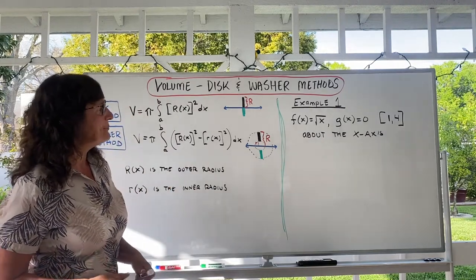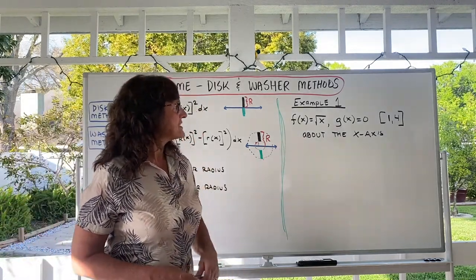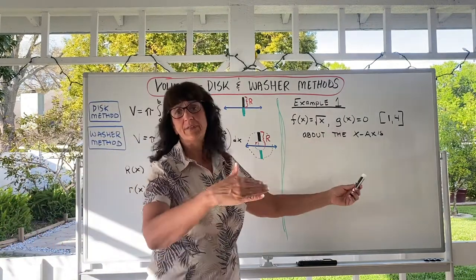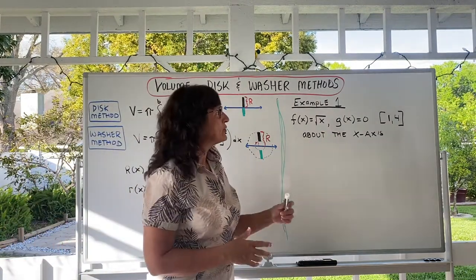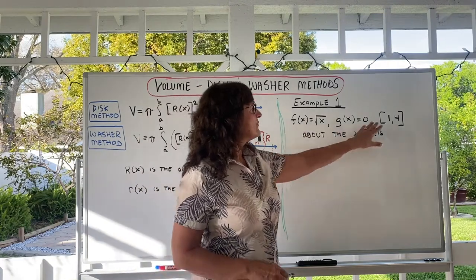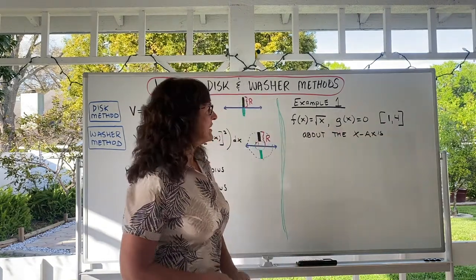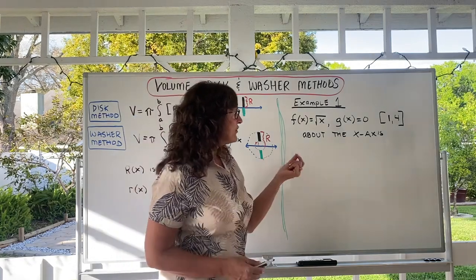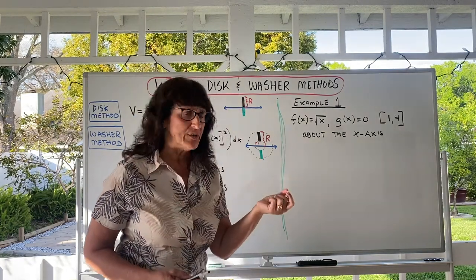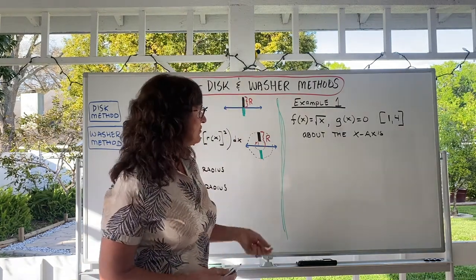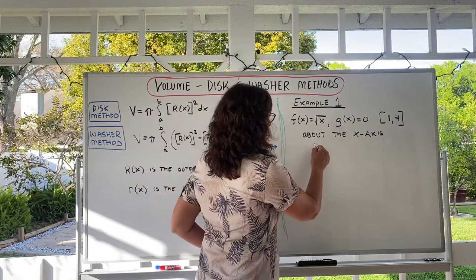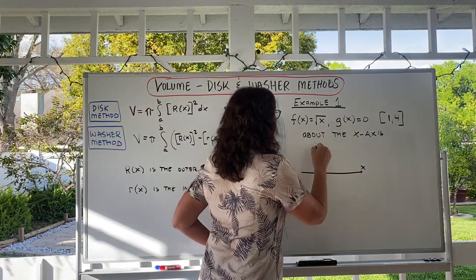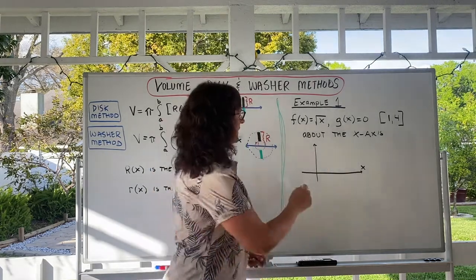Let's take a look at example one. Function f is radical x, and function g is the x-axis, so y equals zero. We're going to take this curve from x equals one to x equals four, so our bounds are given. The first thing we want to do is sketch the curve. We draw the y-axis, we draw the x-axis, and our square root of x curve starts at the origin.